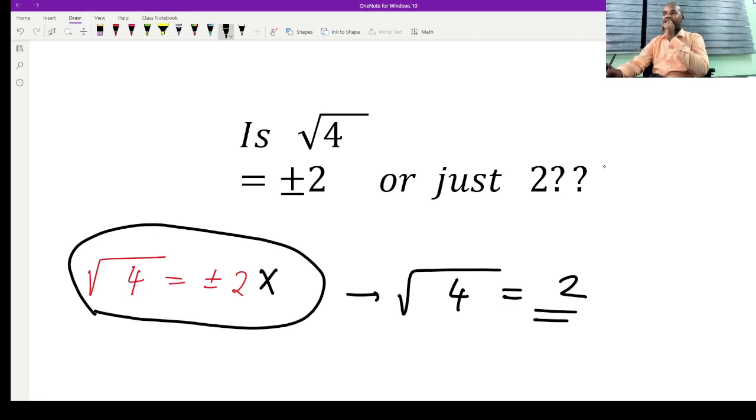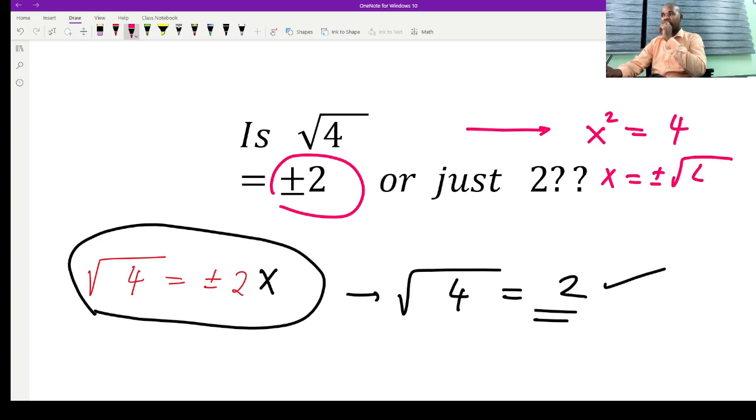Now, when there is a possibility of having plus or minus 2, it is only when you have a question like this one: x squared equals 4. With x squared equals 4, x here is going to be plus or minus square root of 4. And with this situation, we say that x is plus or minus 2.